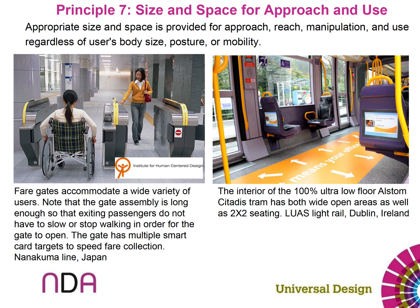Then we have principle seven: size and space for approach and use. In this bus on the right, there are different seating scenarios — if you're just a couple, there's a place for you to sit; if you have a walker, a family, a stroller, or a wheelchair, there's space for you as well. By arranging chairs facing each other, the width that two chairs would have taken is freed up into the aisle way, so there's more space. Similarly, on the left-hand side, it's showcasing how those easy passageways where you scan your card can be more accessible for different sizes and approaches — super wide, with no more bars you have to push and squeeze through.